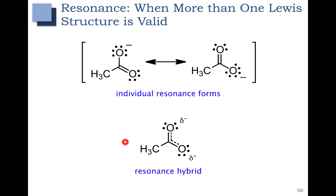We don't typically draw out the resonance hybrid. We typically just draw out the individual resonance forms, but we have to remember that the individual resonance forms are not quite the whole picture. A common question is: why can't we just take this structure and rotate it? In this particular case they are equivalent, but you want to imagine the oxygens as being different - this oxygen I'm coloring in red has the negative charge in one structure but not in the other.